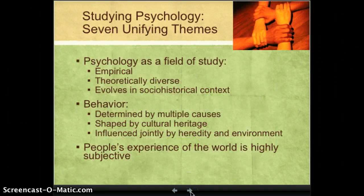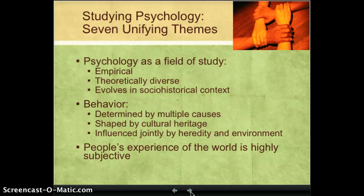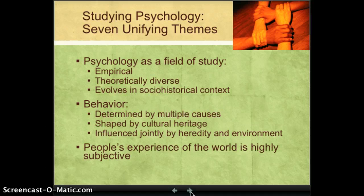While psychology doesn't have a single unifying theory, there are seven unifying themes — things that all modern psychologists generally agree to. First, psychology as a field of study is empirical. That means we use systematic observations to draw conclusions. In other words, psychology is a science.